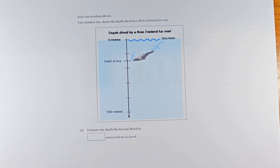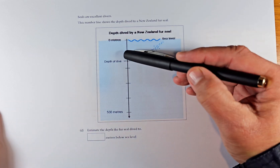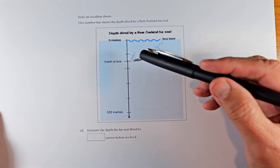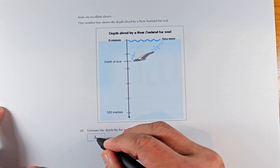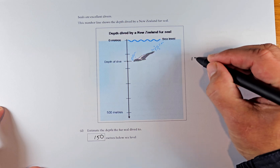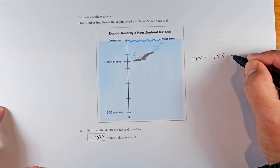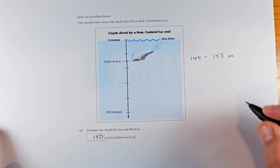The next question shows the depth dived by a New Zealand fur seal. Seals are excellent divers. Estimate the depth the fur seal dives to. You can see this is divided into five parts representing 500 meters total — so every line is 100 meters. The seal dives between 100 and 200 meters, so I would safely say it is 150 meters below sea level. In fact, anything from 145 to 155 meters below sea level will be accepted. This is outcome number two.